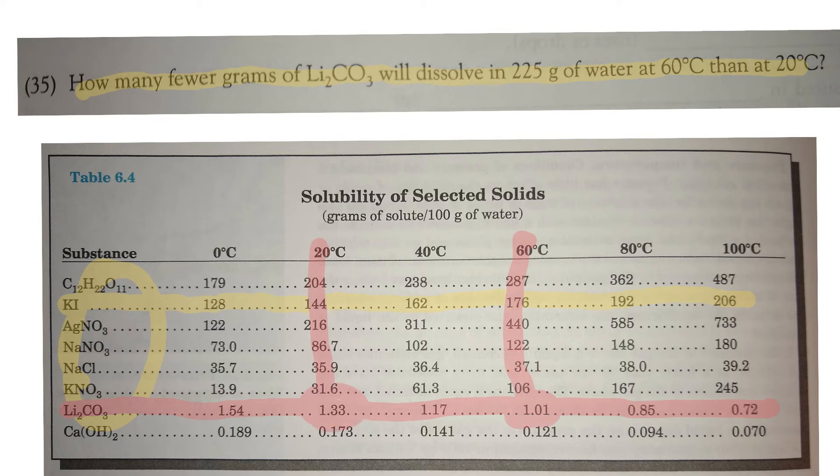So interestingly, for this one, the higher the temperature, the less soluble it is—it actually decreases. Most of the others I'm looking at look like they increase from left to right, and this one decreases.